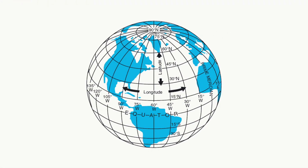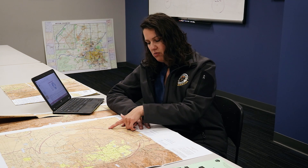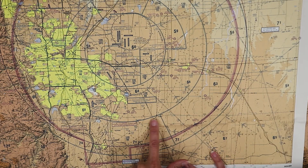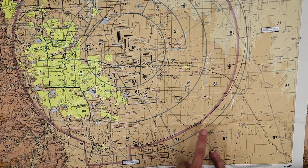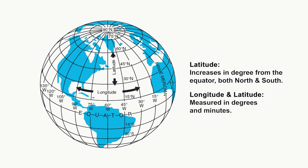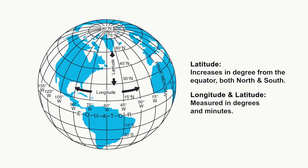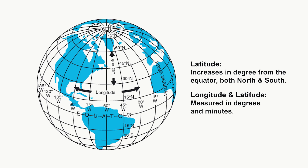The best way to introduce charts to your students is to talk about map basics — and by map basics I mean longitude and latitude in relation to the globe. On our chart we can see lines of latitude and longitudinal lines, and they increase in degree from the equator north and south, all measured in degrees and minutes.